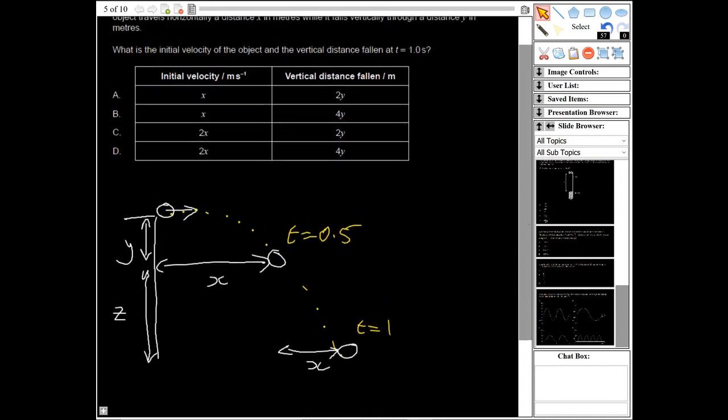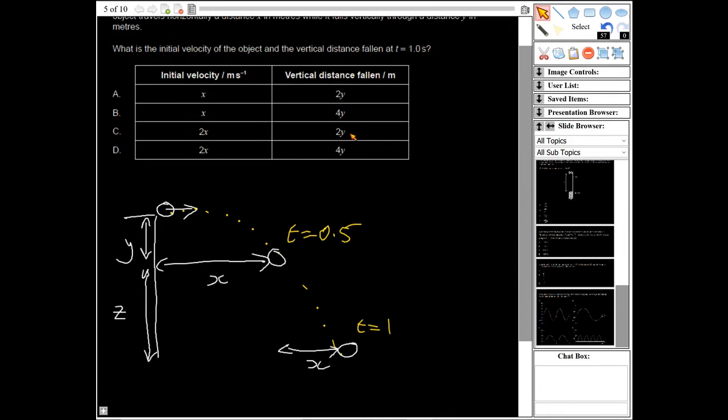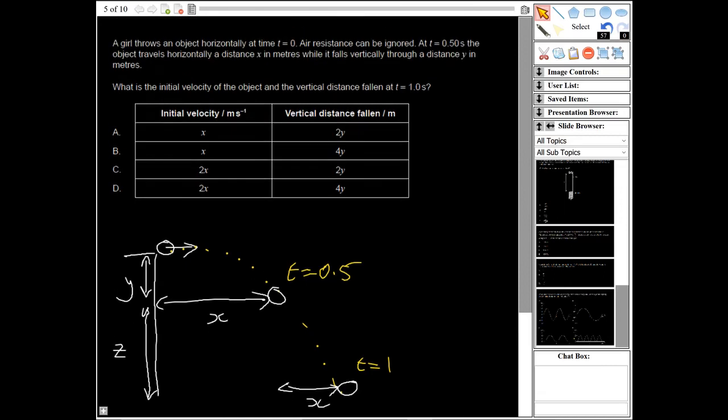Then we could probably just work out what the answer was from here since we know it's going to accelerate downwards. It can't possibly be y again because it's going to have to travel further, so that would suggest it's going to be D, which is 4y.